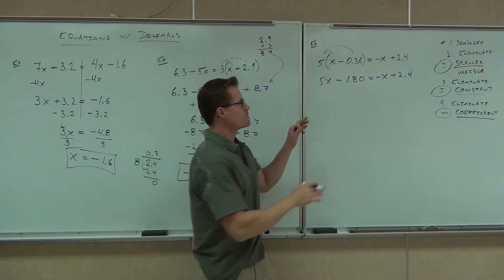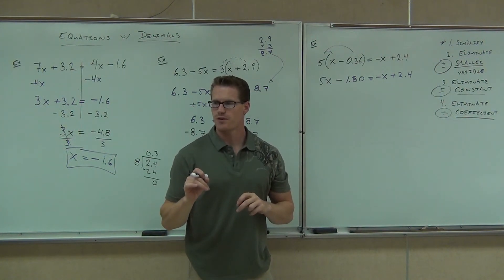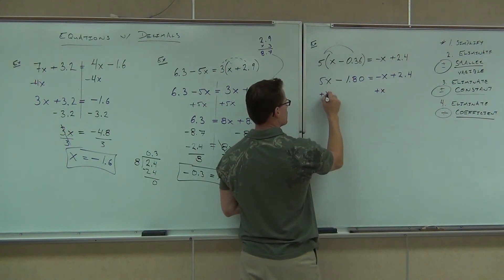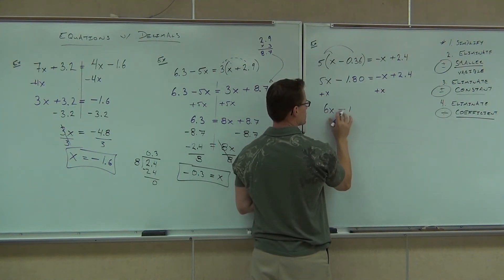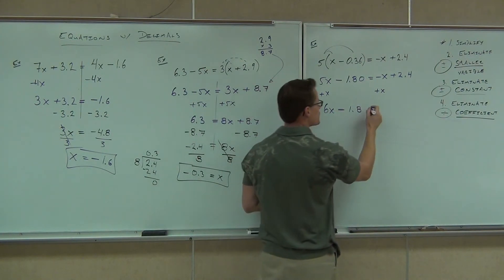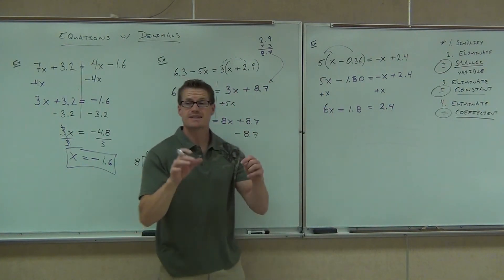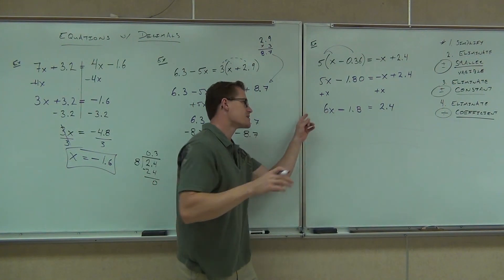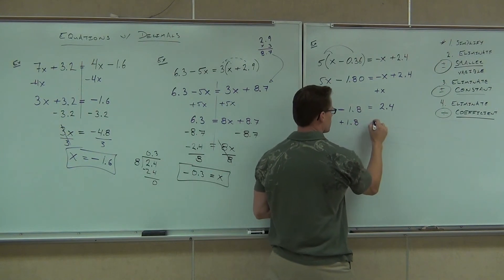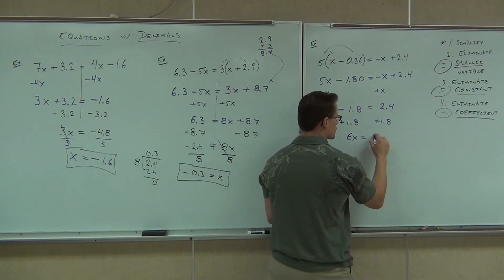Now next step — do we move around numbers or variables? Variables come first. Get rid of the minus x — we'll add that. We'll get 6x minus 1.8 equals 2.4. Next, look for any constant terms around your variable — not the 6, but the 1.8. We're going to add that to both sides, and we'll get 6x equals 4.2.